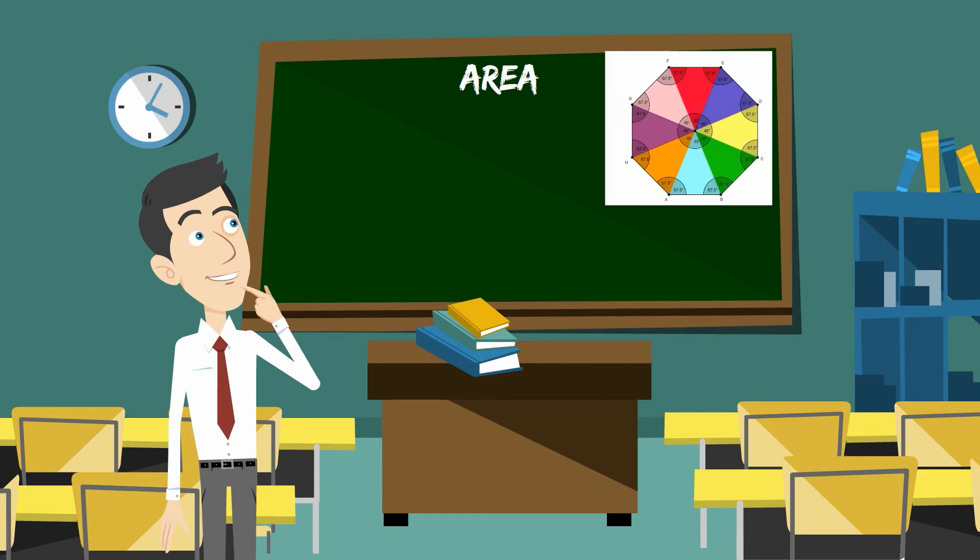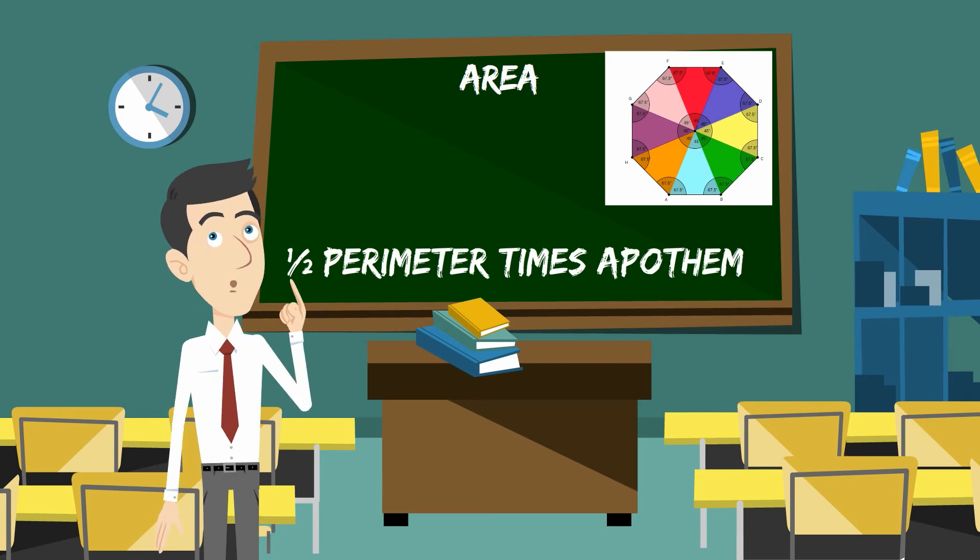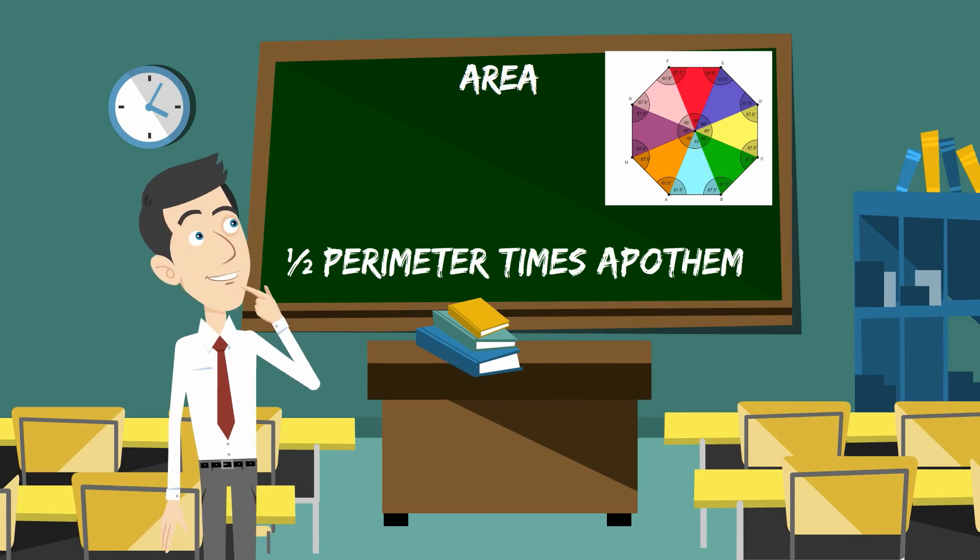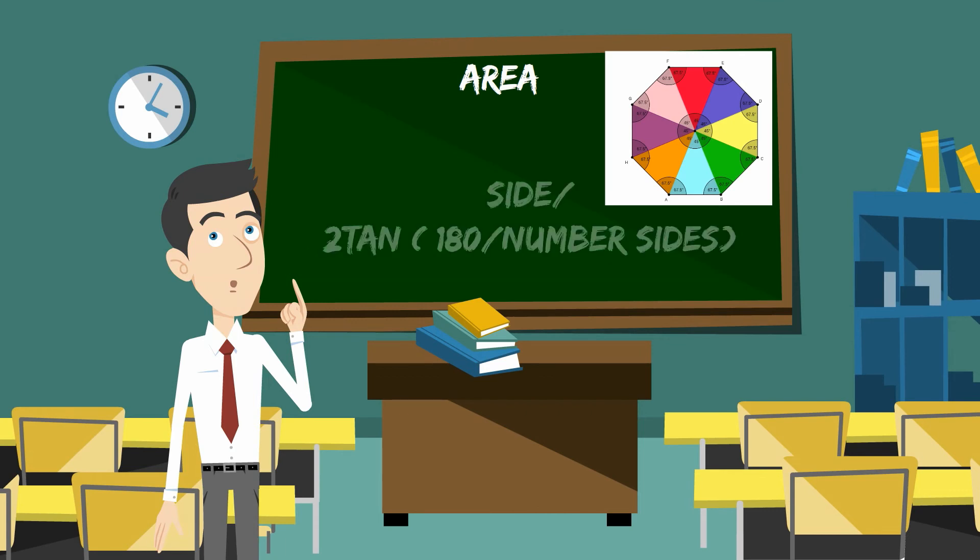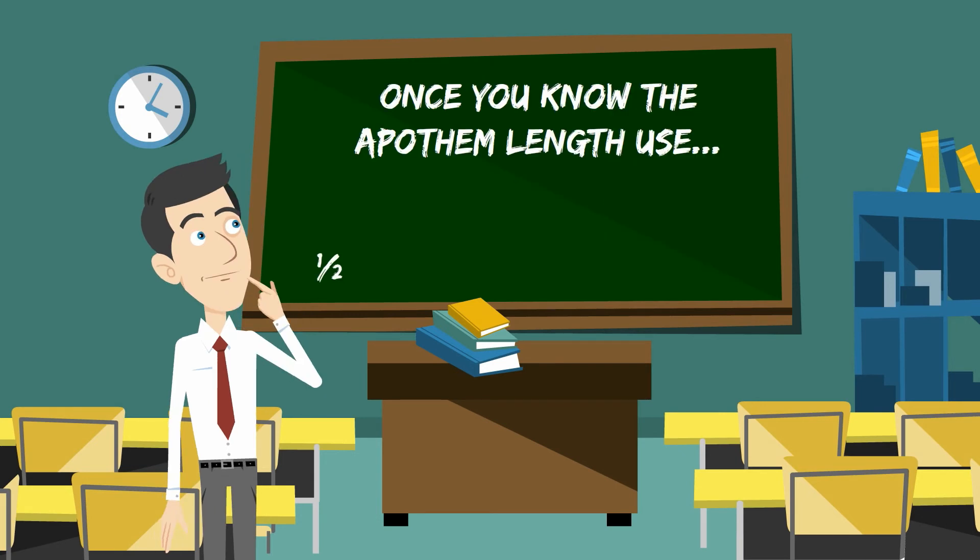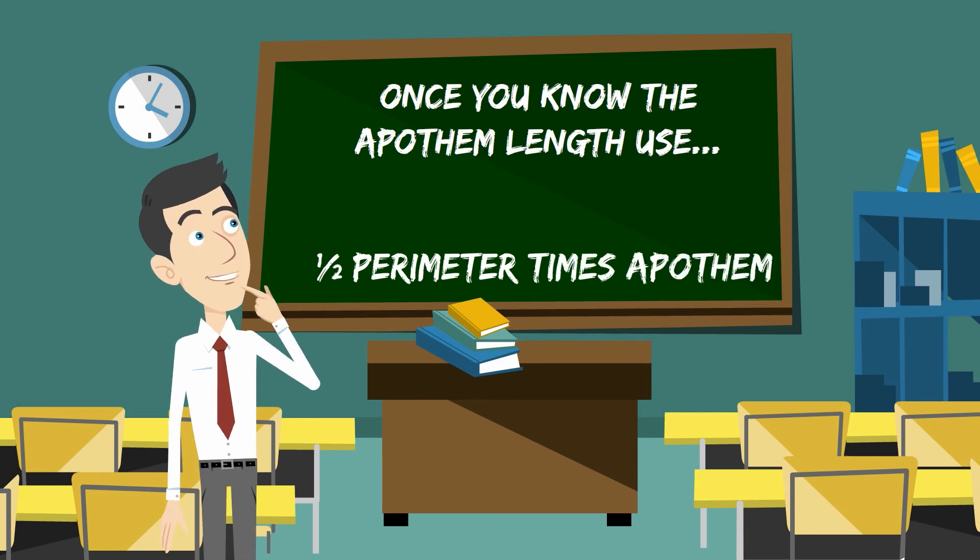The area of an octagon the easiest way is to take 1/2 times perimeter times the apothem. If you don't know the measure of the apothem you can use the side length divided by 2 times the tangent and then in parenthesis have 180 divided by the number of sides and this will give you the apothem. Then you can plug this into the formula of 1/2 perimeter times the apothem.